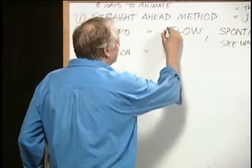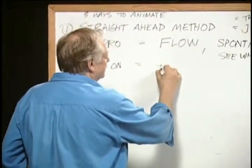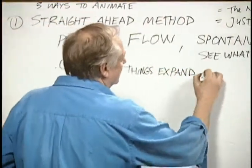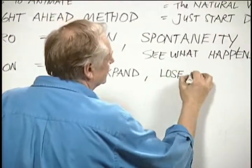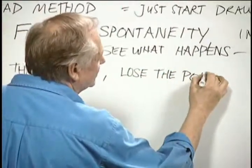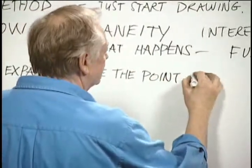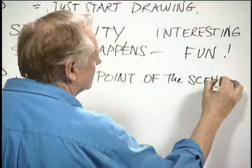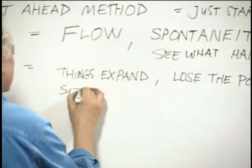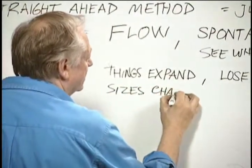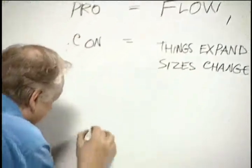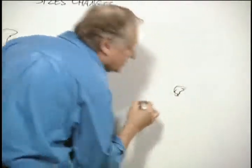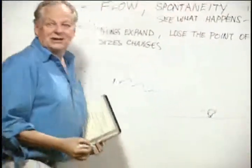But the bad part of it is that things expand. We lose the point of the scene — tendency to lose the point of the scene. And sizes change dramatically. You're animating a creature that's this size, and as you're in the heat of creativity, he ends up about this size — only if you're trying to walk him on a straight plane.